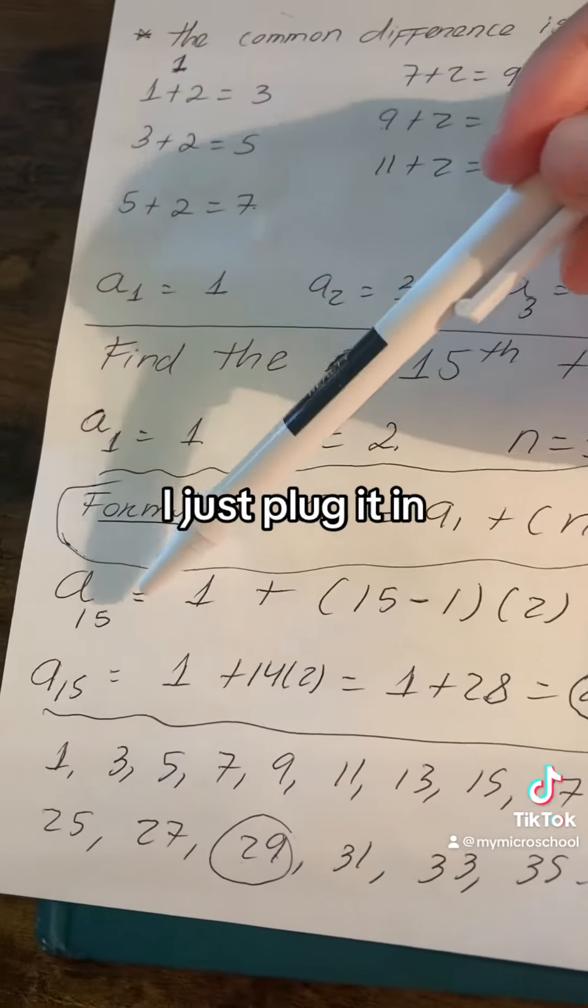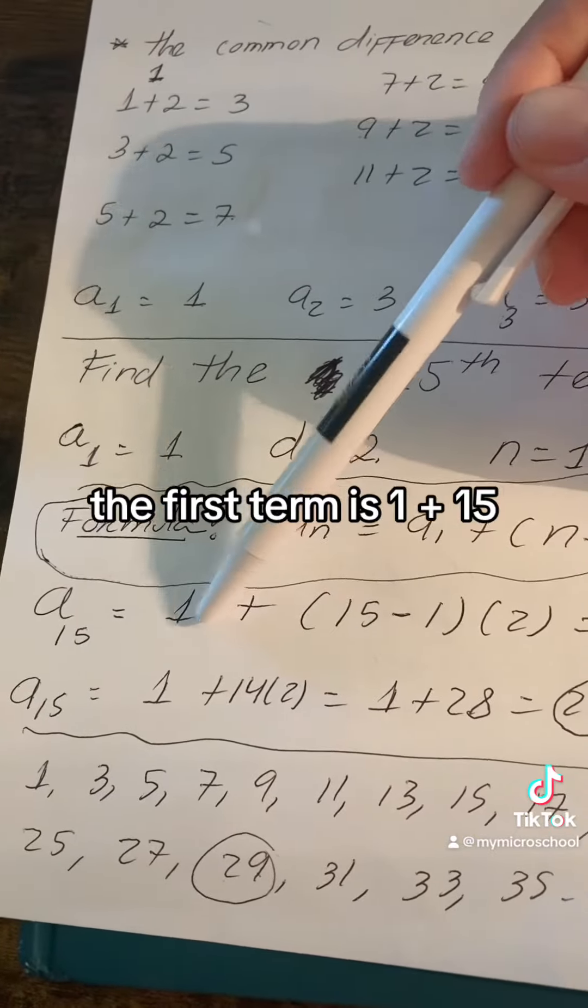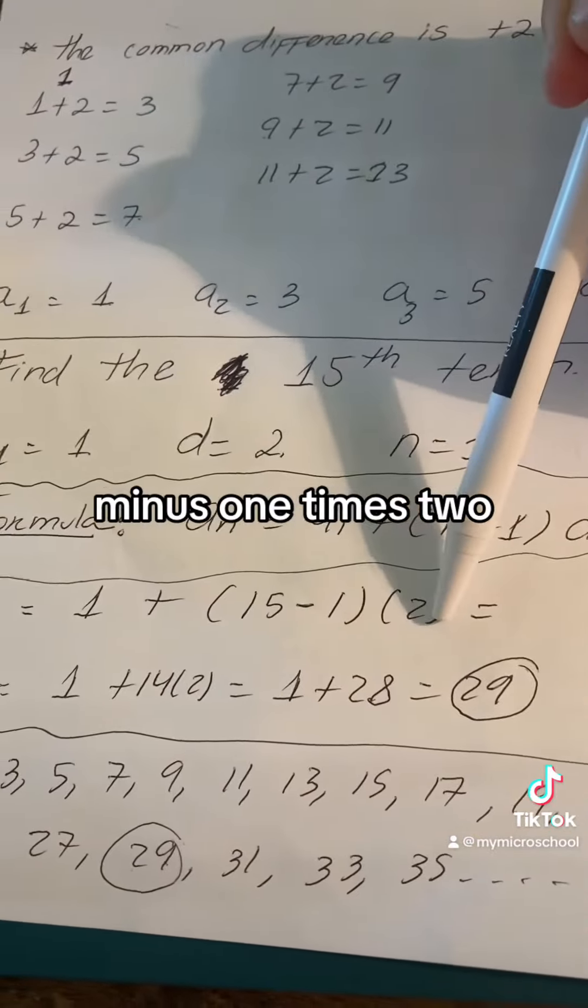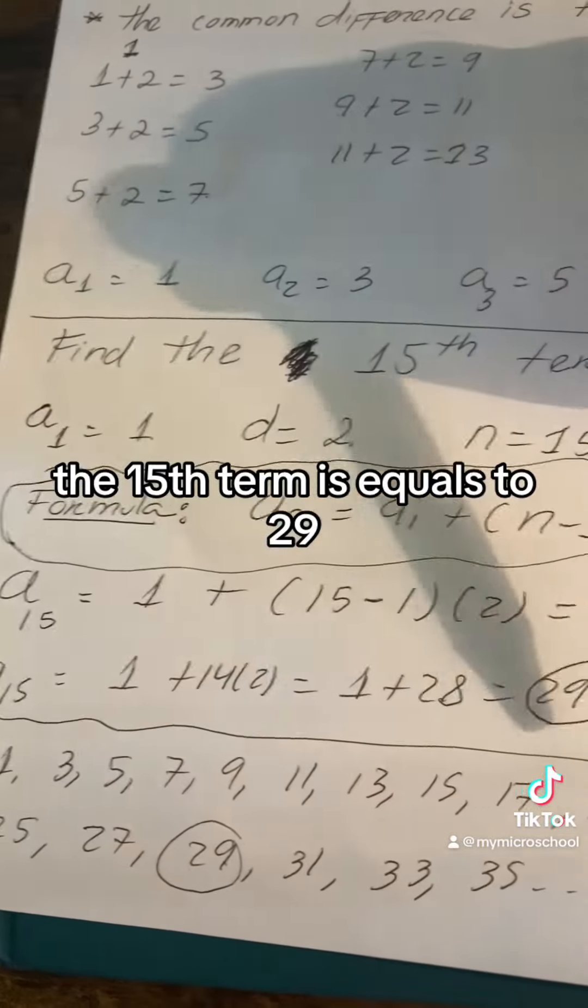I just plug it in and I have the 15 right here because that's your n. The first term is 1 plus 15 minus 1 times 2. From there, look at this, the 15th term equals 29.